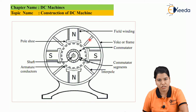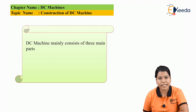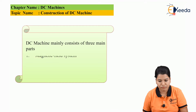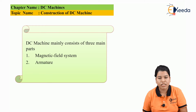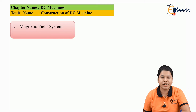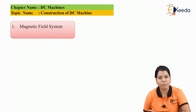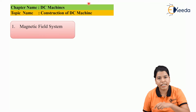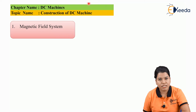The overall construction shows that the air gap is non-uniform. Such type of machines which have non-uniform air gap between stator and rotor are called as salient pole machines. DC machine mainly consists of three parts: first is magnetic field system, that is nothing but stator; second is armature, that is nothing but rotor; and third is commutator and brush gear.